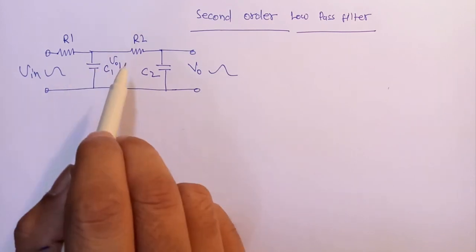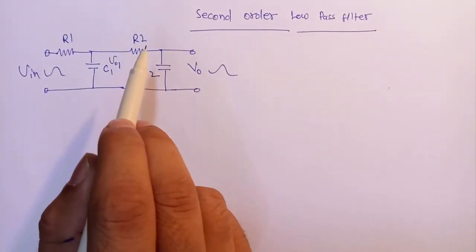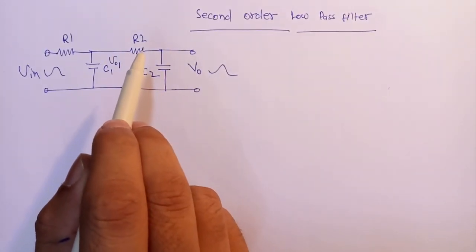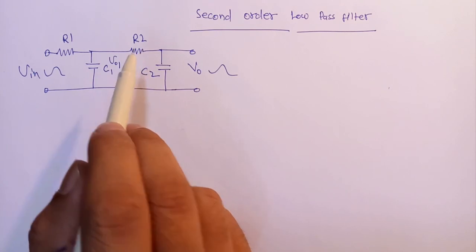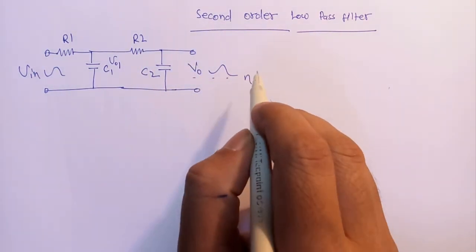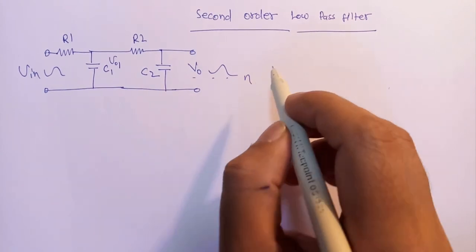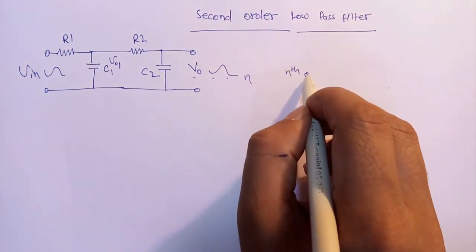The more RC stages we add, the higher the filter becomes. If we add N number of such stages, it becomes an Nth order filter.